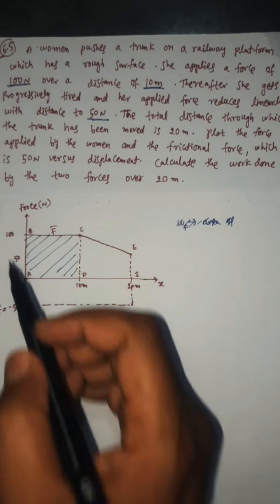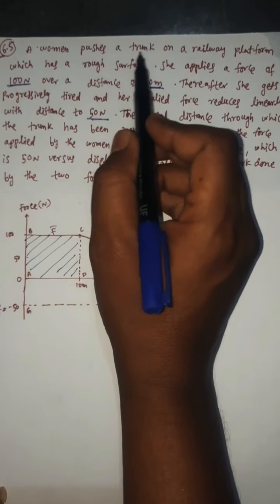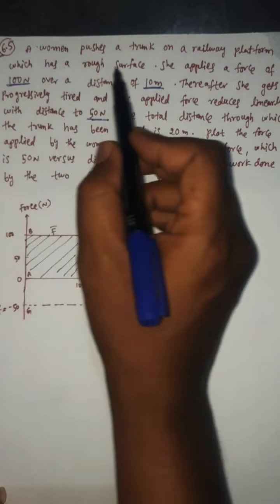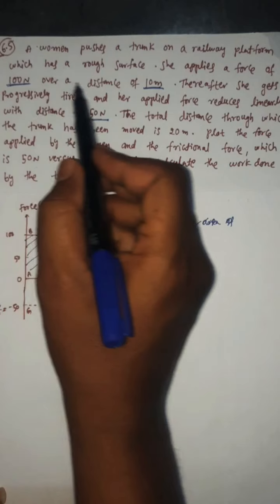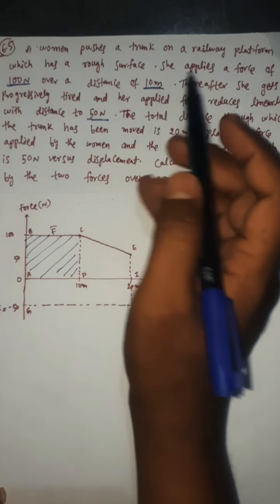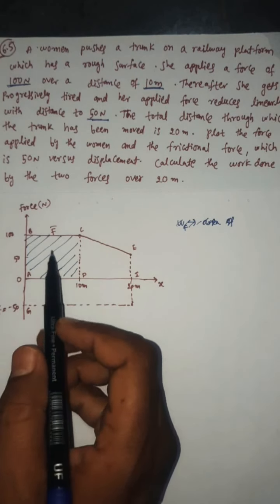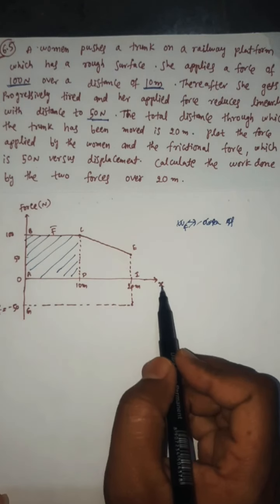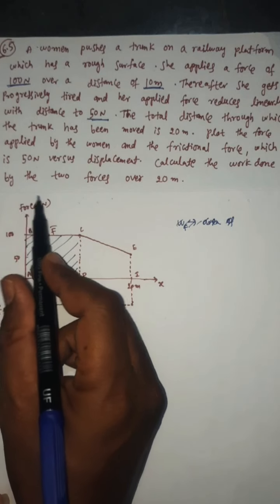Example problem 6.5. A woman pushes a trunk on a railway platform which has a rough surface. She applied a force of 100 Newtons over a distance of 10 meters. Here they give a force versus displacement graph. On the x-axis, it is displacement; on the y-axis, force is given.